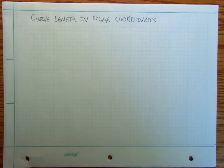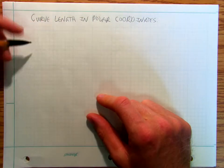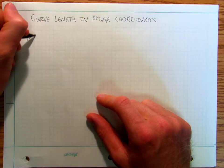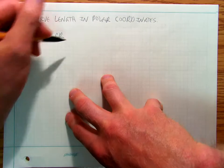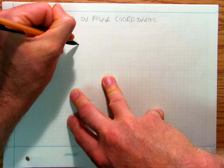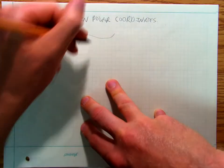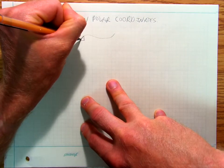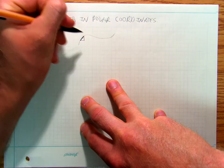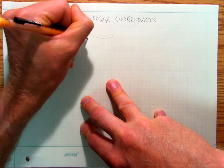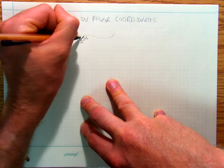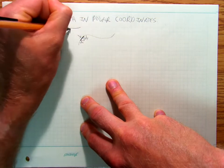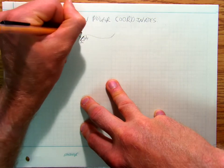In this video we're going to look at calculating curve length in polar coordinates. We're going to start off with rectangular coordinates again. We said that you've got some sort of curve and we break it into rectangles where that's dx, that's dy, and so the length is going to be the square root of dy squared plus dx squared.